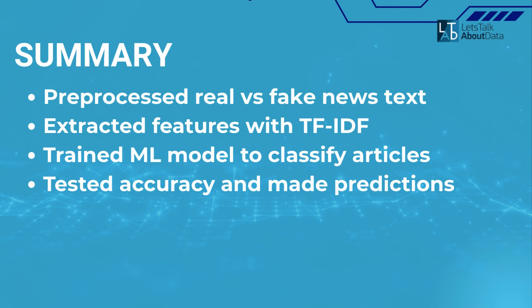Summary: we pre-processed real versus fake news text, extracted features with TF-IDF, trained an ML model to classify articles, and tested accuracy and made predictions. This project is a great example of how data science and NLP can be used for social good. Try using other models like Naive Bayes or SVM for comparison.